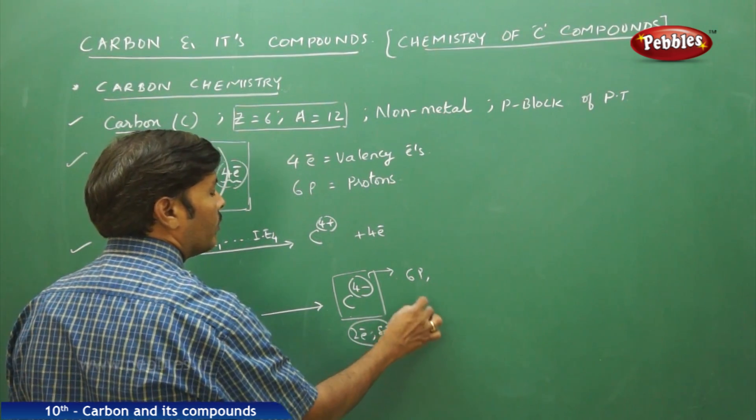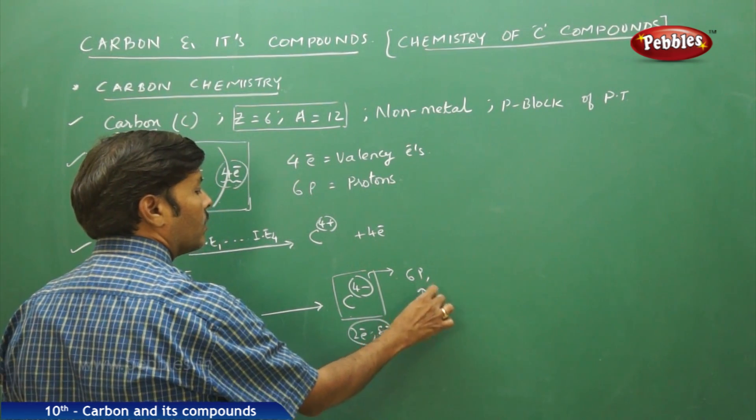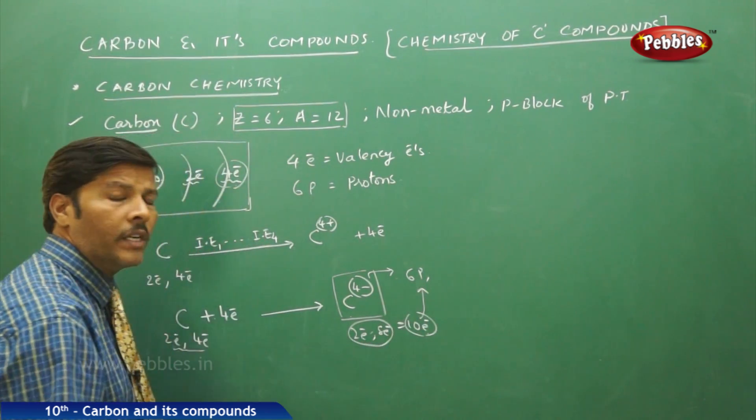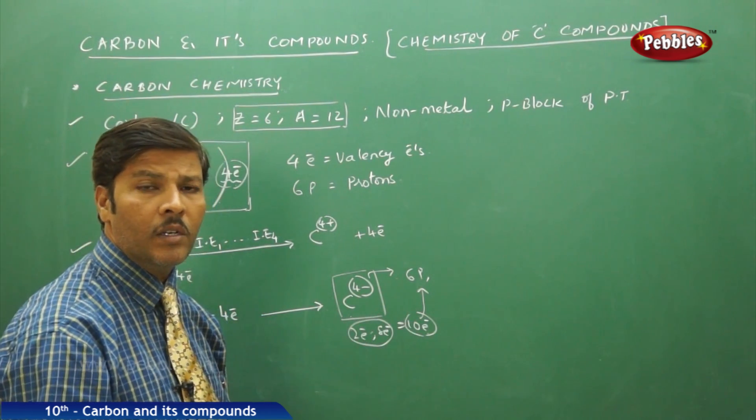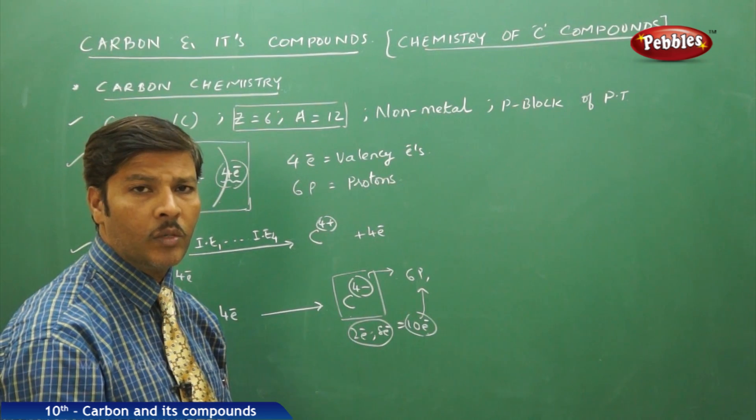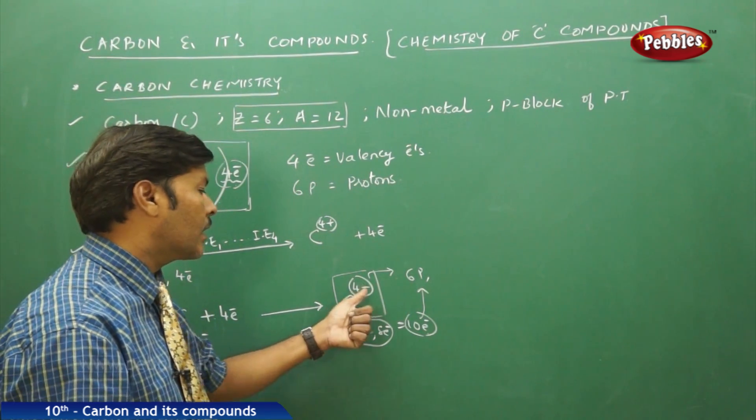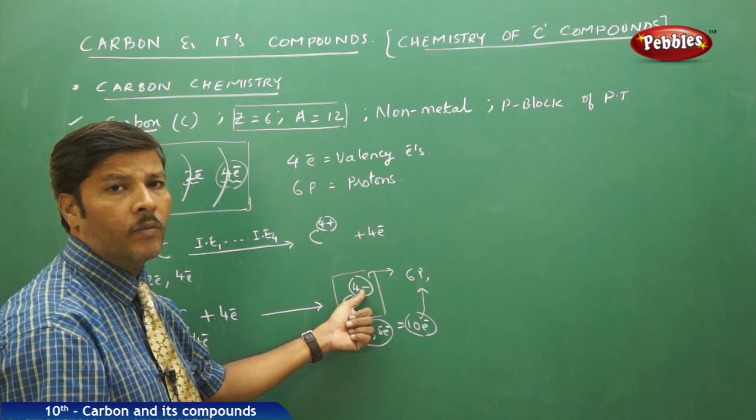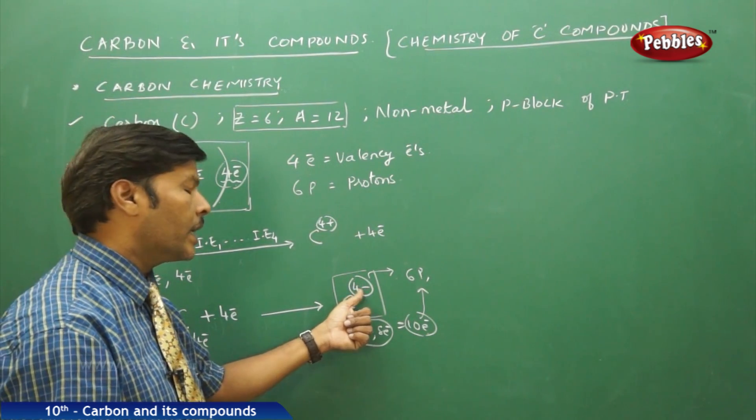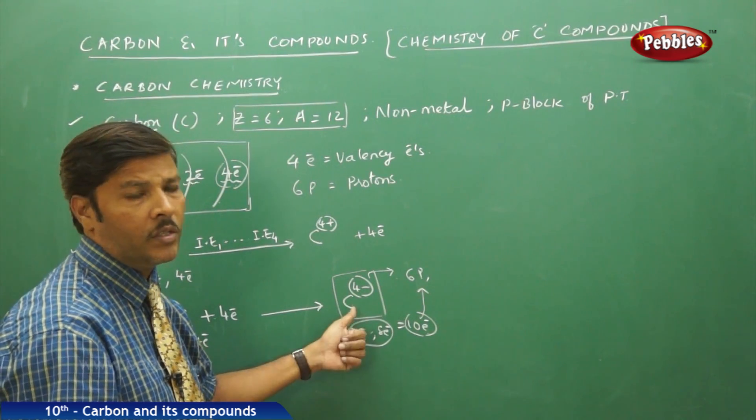6 electrons, it becomes very difficult. The 6 protons cannot attract 10 electrons so easily in the structure of the atom within the nucleus. So with great difficulty, the carbon is going to form C4 minus. That is, carbon cannot acquire 4 minus oxidation state or negative oxidation state with that much ease.